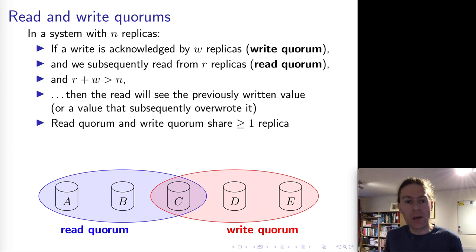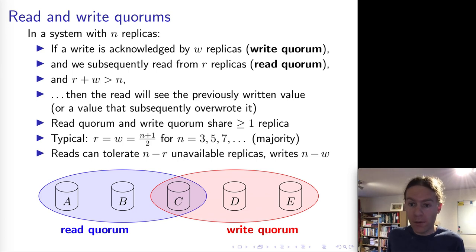Another way of putting this is that we have these two subsets, and subsets of nodes have to have a non-empty intersection. So for example, if we have five nodes, we could require a write quorum of three and the read quorum of three that would satisfy this condition. And in this case, those two subsets of nodes are always guaranteed to have at least one element in common. So they will have a non-empty intersection.